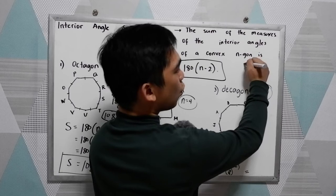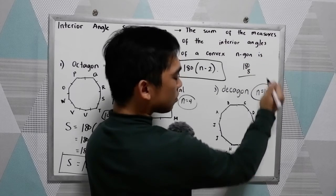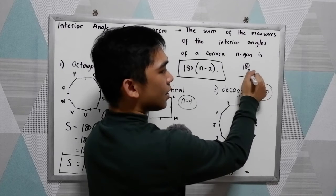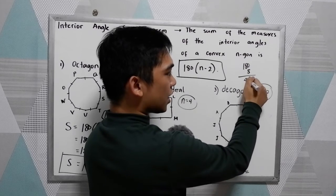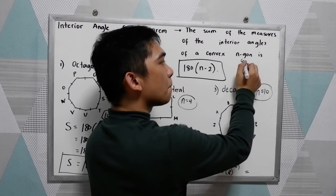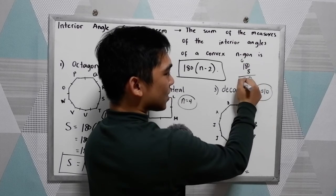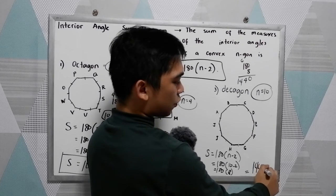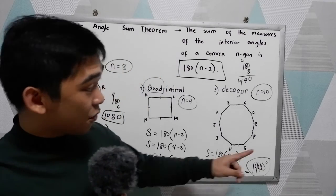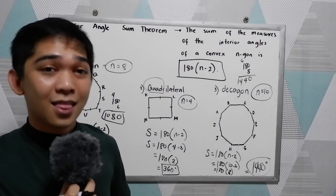Now multiply, 180 times 8. So we have 8 times 0, that is 0. 8 times 8, that is 64, carry 6. 8 times 1, that is 8, plus 6, that is 14. So 1440. That is the sum of all the angles in our decagon.